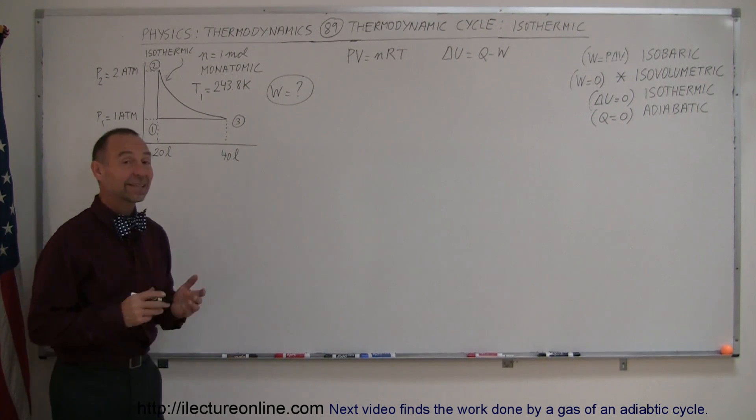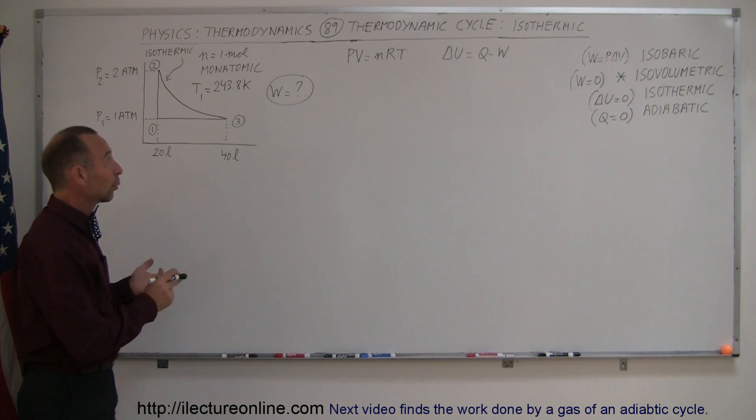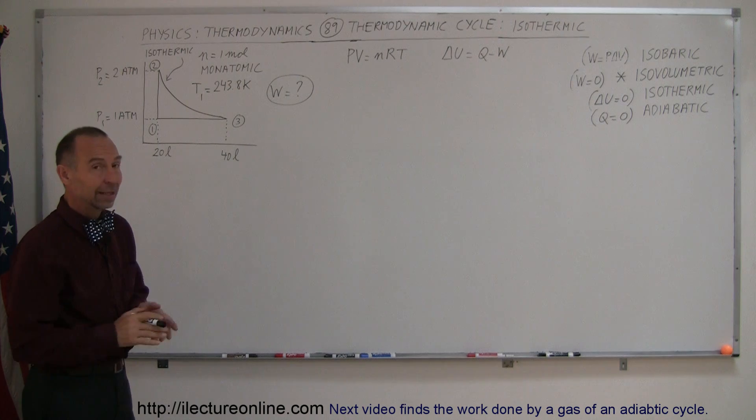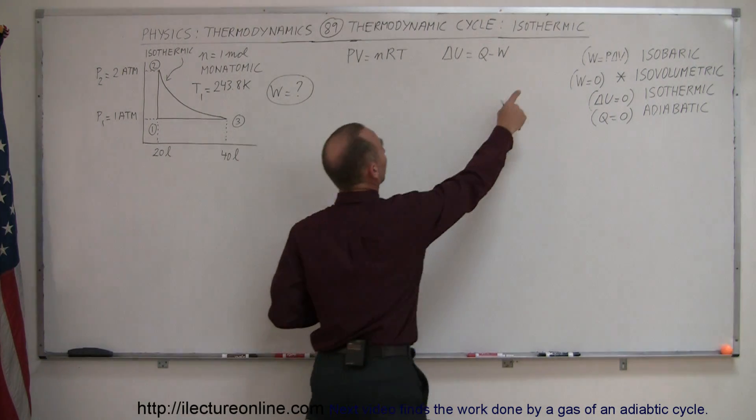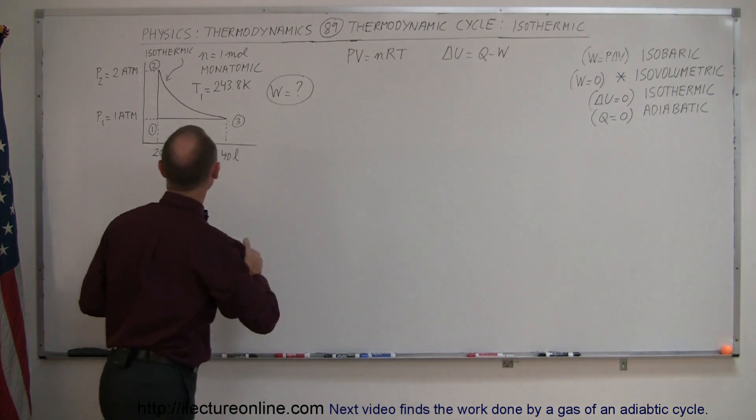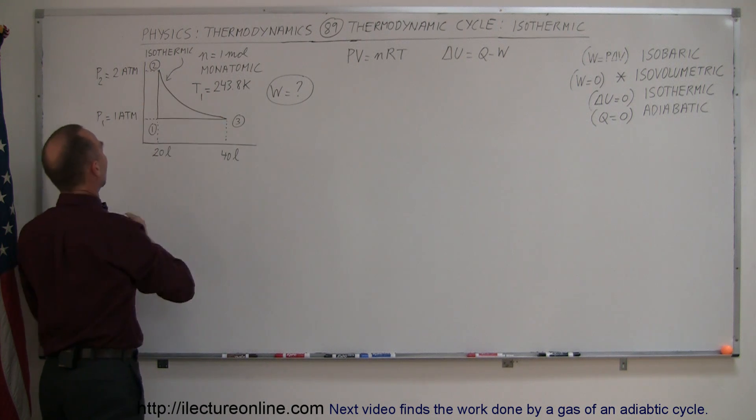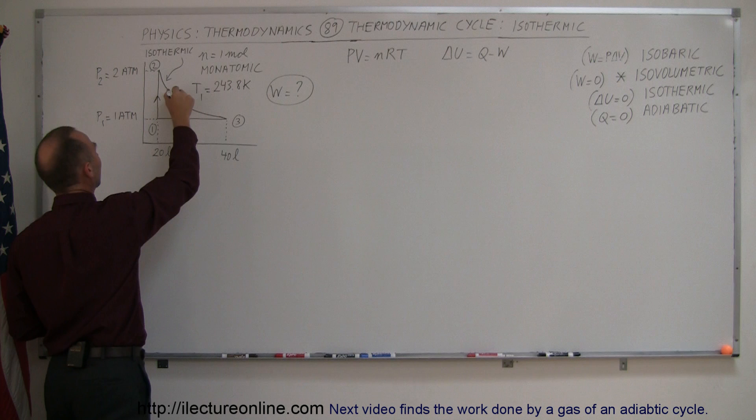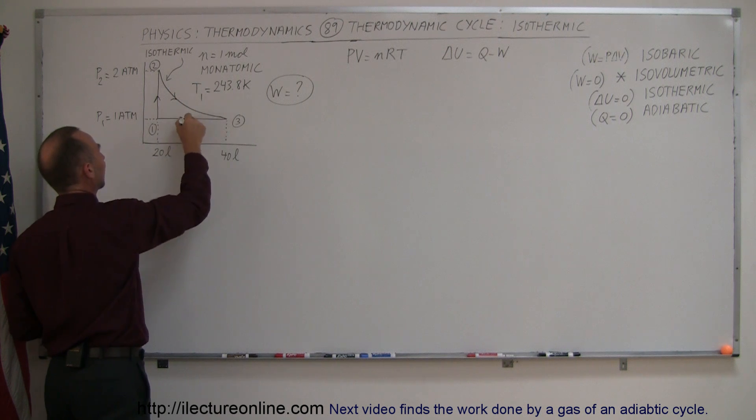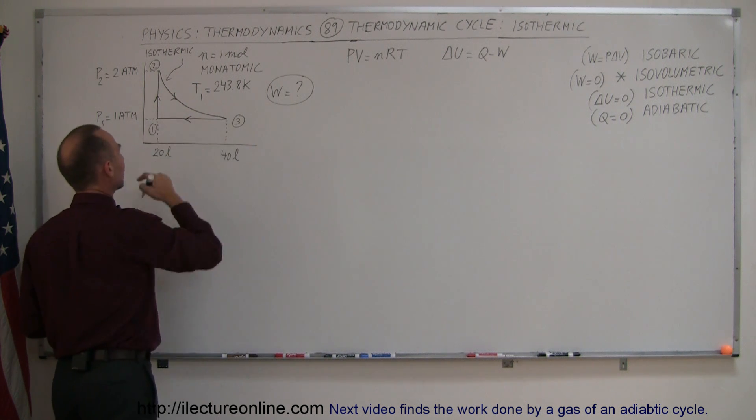Welcome to our lecture online. In our next example for calculating the work done in a thermodynamic cycle, we're going to use an isothermic process in our cycle, and this is the isothermic process right here. So we have first an isovolumetric process, we go from one to two, then we have an isothermic process, and then we have an isobaric process going back to the original state.